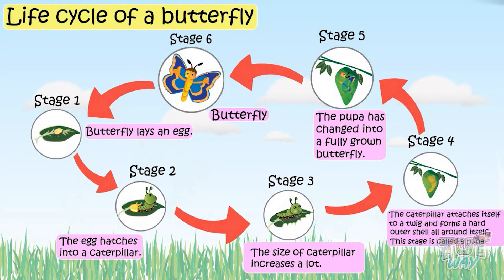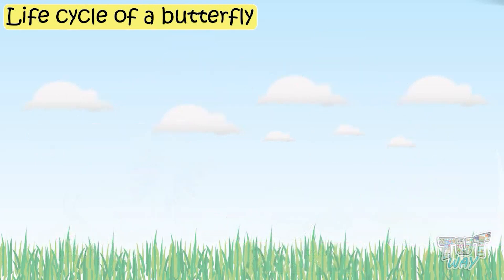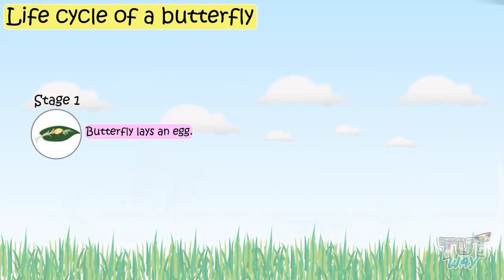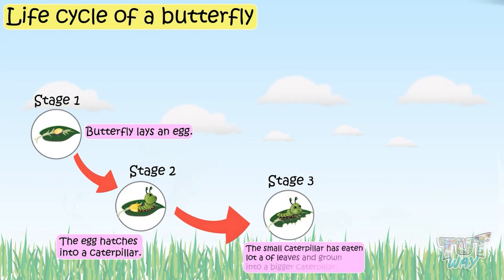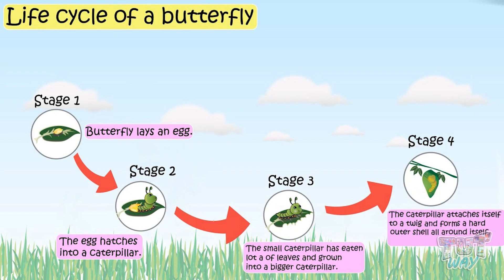Now let's revise the cycle. Stage 1: the butterfly lays an egg. Stage 2: the egg hatches into a caterpillar which is small in size. Stage 3: the small caterpillar has eaten a lot of leaves and has grown into a bigger caterpillar. Stage 4: the caterpillar attaches itself to a twig and builds a hard shell around itself — at this stage it is called a pupa.